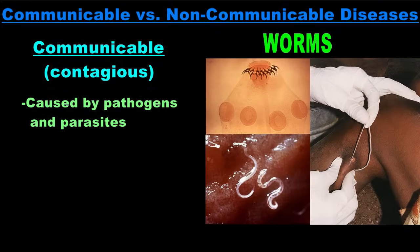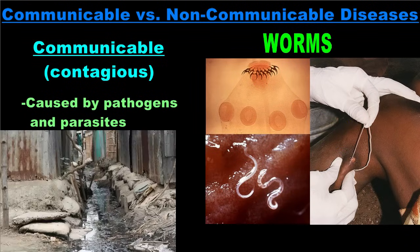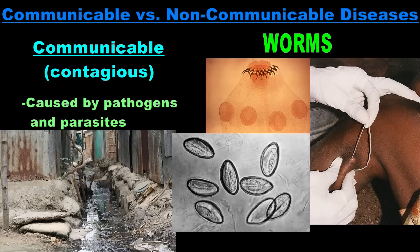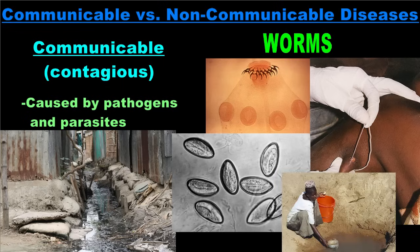In most cases, worm parasites like those just mentioned are spread when the feces of an infected person contaminate soil or water in areas of poor sanitation. The feces contain worm eggs, so if another person happens to drink the contaminated water or walk in contaminated soil, the worms may invade their bodies.